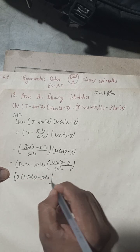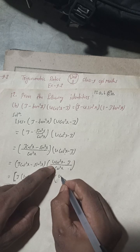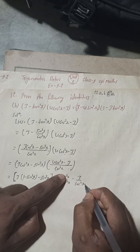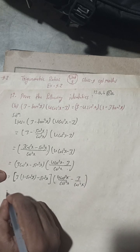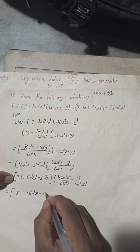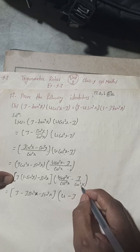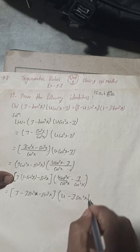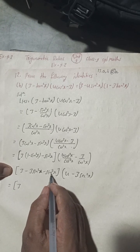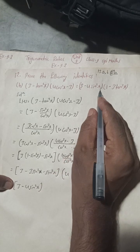For the second bracket, splitting 4cos²x divided by cos²x gives 4, and minus 3 divided by cos²x gives 3 times (1/cos²x). Simplifying: 4 minus 3sin²x... rearranging terms gives us 3 minus 4sin²x for this first part.